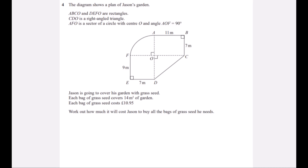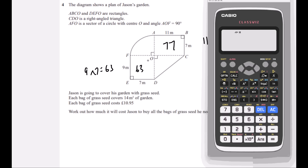Question 4. The diagram shows a plan of Jason's garden. ABCO and DEFO are rectangles, CDO is a right-angle triangle, and AFO is a sector of the circle, centre O, with a 90-degree angle — a quarter circle. Jason's going to cover the garden with grass seed; each bag covers 14 m². So the areas: 9 × 7 = 63, 11 × 7 = 77, and the triangle is half × 11 × 9 = 49.5.